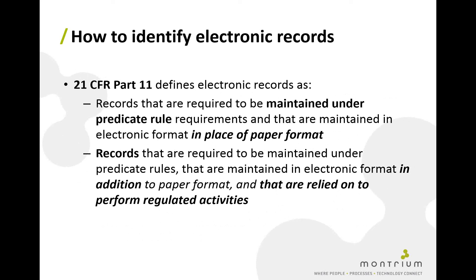21 CFR Part 11 Scope and Application (2003) gives clear guidance on what constitutes an electronic record. There are four types: first, any record required to be maintained under predicate rule that is maintained in electronic format in place of paper — essentially any required electronic source. Second, records required under predicate rule maintained in electronic format in addition to paper, and relied upon to perform regulated activity — so electronic copies of paper records where decisions are made on the electronic copy.